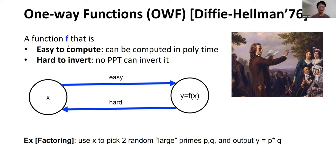A function f is one-way if it is easy to compute — f can be computed in polynomial time — and f is hard to invert, so no PPT machine can invert f. Given the input x it's easy to compute the output f(x), but given the output f(x) it's hard to find the pre-image x.